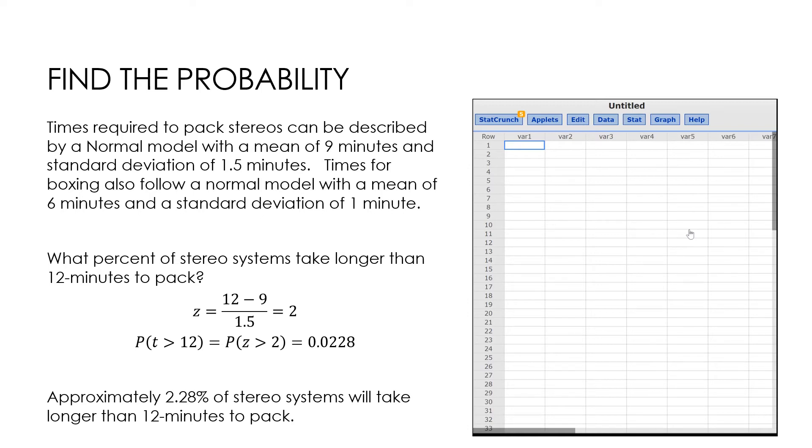So notice, I'm only worried about the packing times, which is the mean of 9, standard deviation of 1.5. So now I'm going to find that Z-score, which is the observed of 12 minutes minus the expected of 9 minutes to get 3 and then divide that by the standard deviation of 1.5 to get a Z-score of 2.